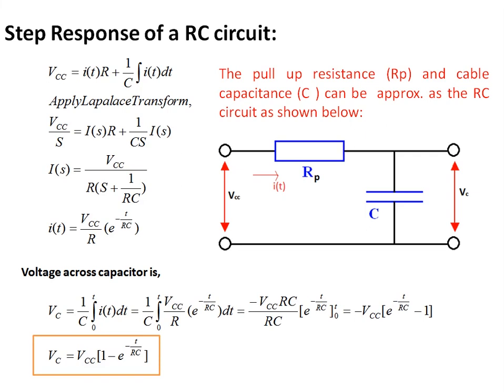The voltage across the capacitor is VC equals (1/C) times the integral from 0 to t of i(t) dt. Applying this, we finally get the voltage across the capacitor: VC equals VCC times (1 − e^(−t/RC)).